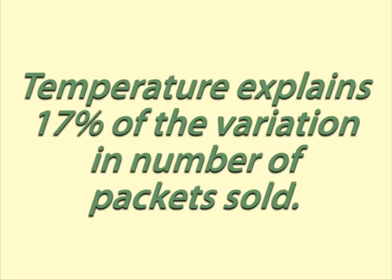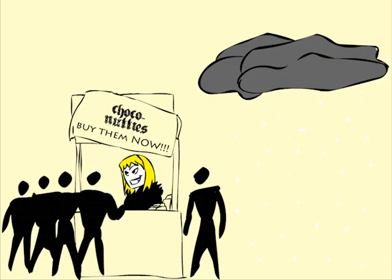This tells us that temperature explains 17% of the variation in number of packets sold. We conclude that as the temperature gets colder, Helen does sell about 2 packets more for each degree of temperature.